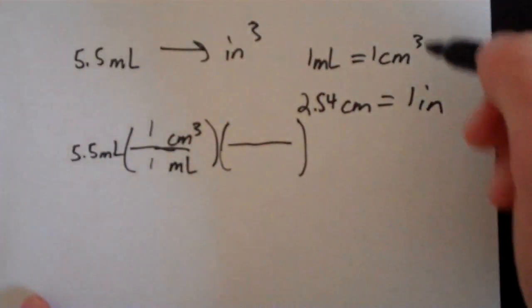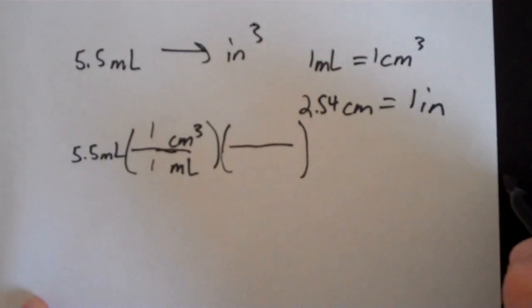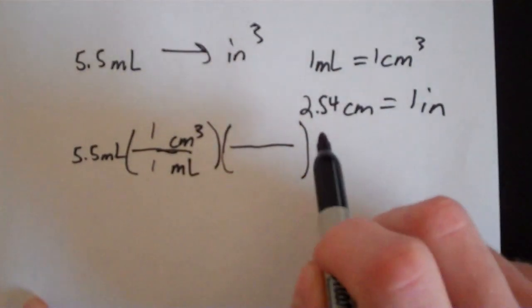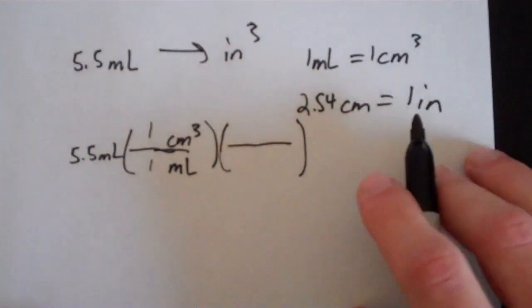Under these two equations, we don't know the relationship between cubic centimeters and cubic inches, but we know the relationship between their units when they're not cubed. We know that 2.54 centimeters is equal to 1 inch, so that's going to help us out.